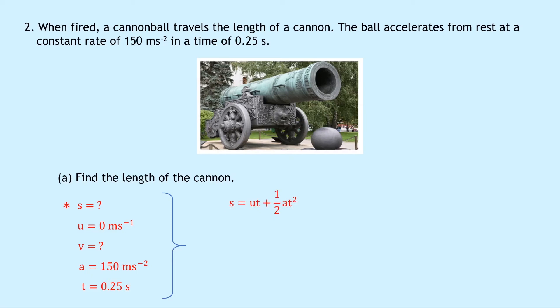Substituting in the numbers: S equals 0 plus 0.5 times 150 times 0.25 squared — don't forget the squared when you put that into your calculator — and this simply gives you 4.7 metres.